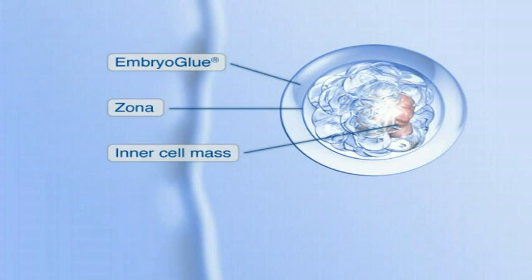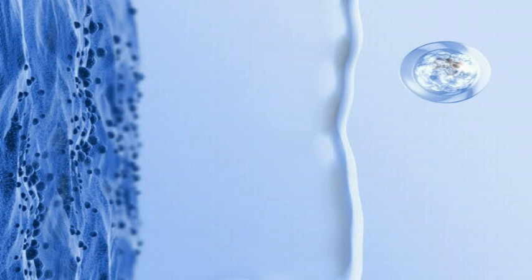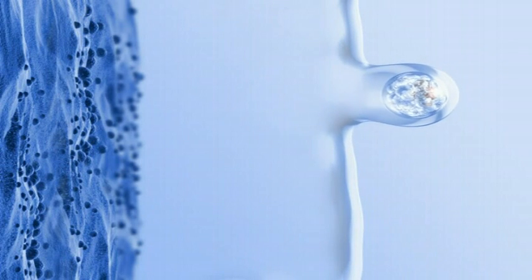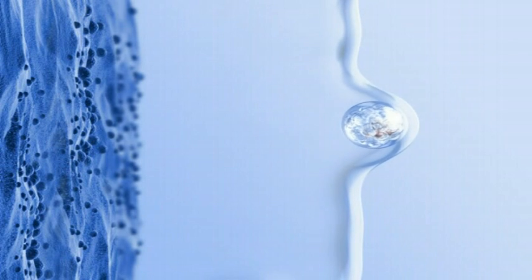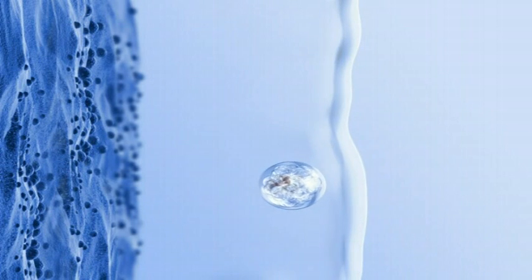The embryo glue coats the complete embryo surface. The viscous embryo glue solution readily diffuses with viscous uterine secretion and brings the embryo into close contact with the endometrium.